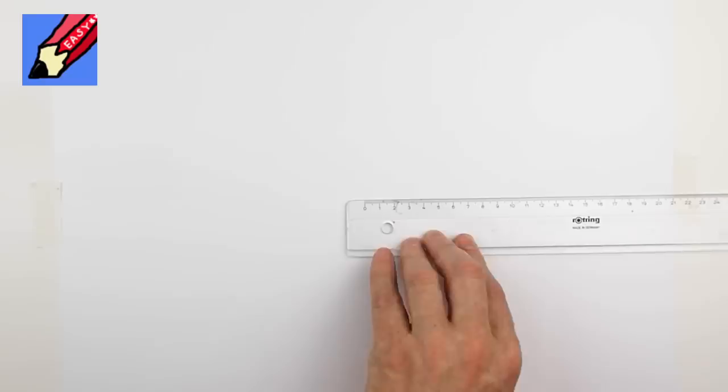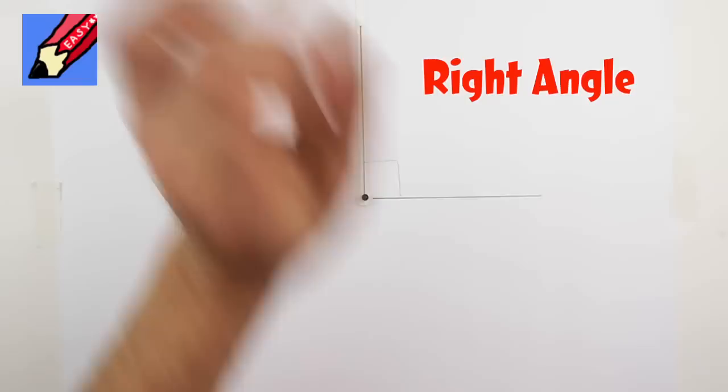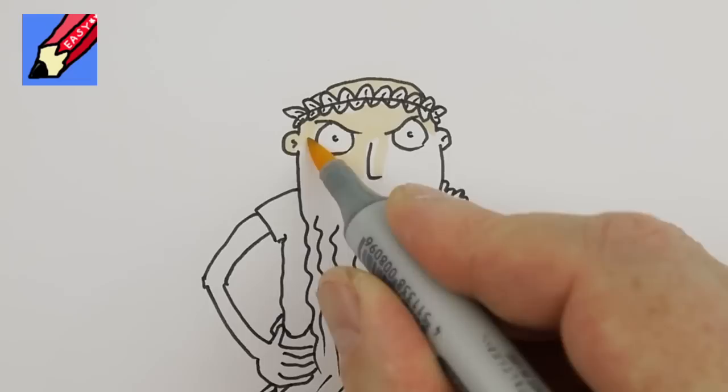Now, if you keep raising the line, it will eventually get right to the top. We shall call this a right angle and we'll draw a little square at the bottom to let everyone know. Right, said Euclid's friends. Euclid gave them an old-fashioned look.